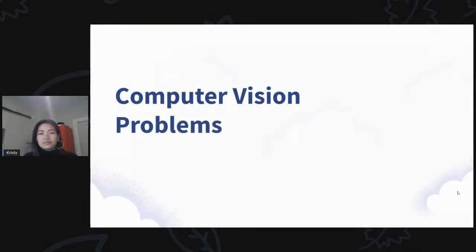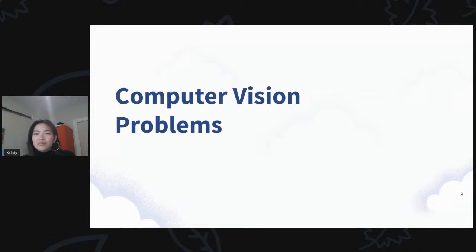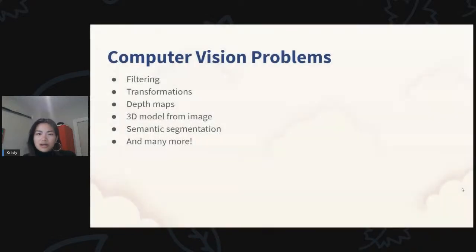So we can jump right into the computer vision problems, where basically every single interpretation I just gave from those images of the dog and the cat can be a problem that needs to be solved — code that can be written to answer those questions. We'll jump into some of the more common problems to solve in computer vision.